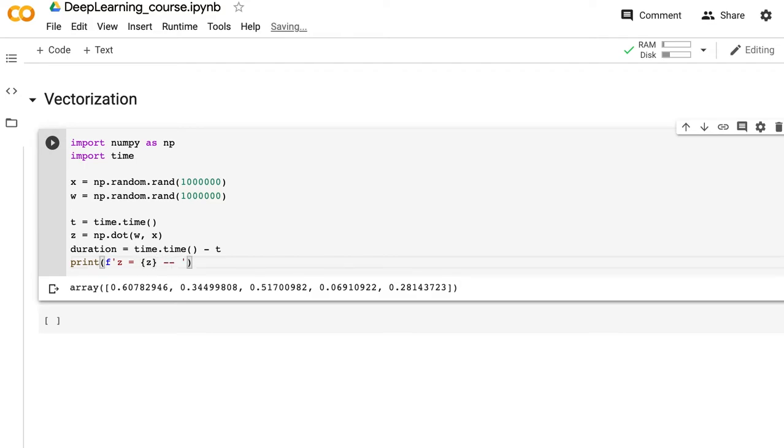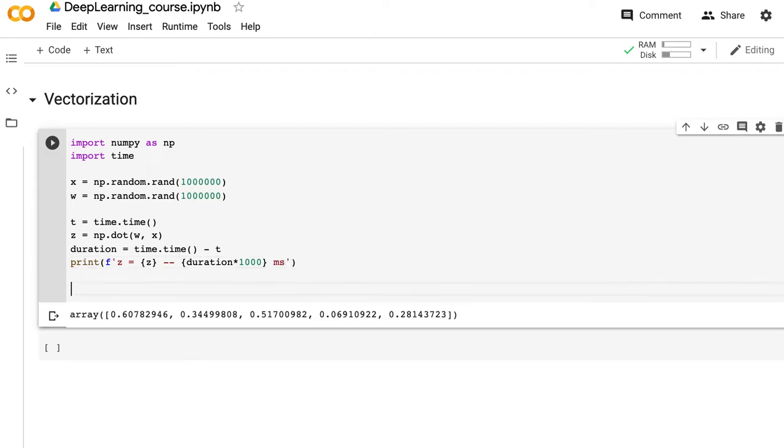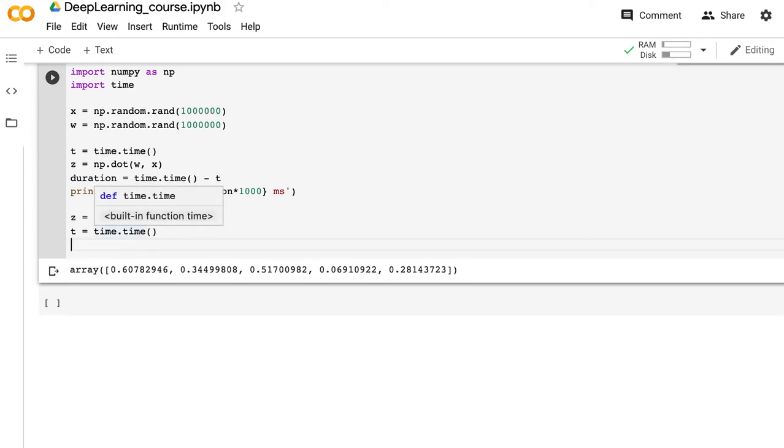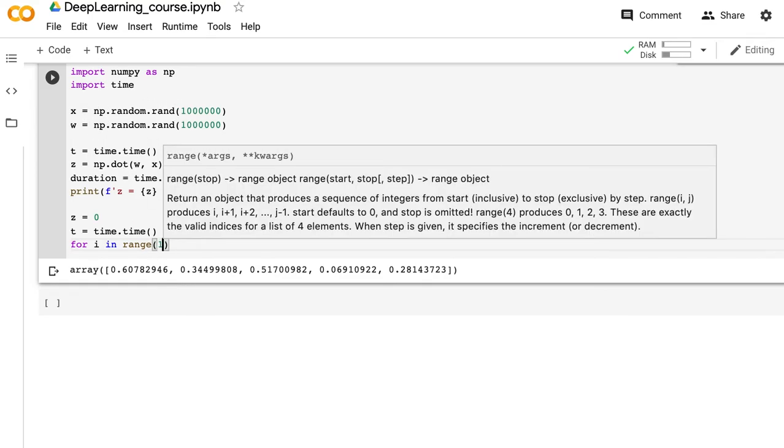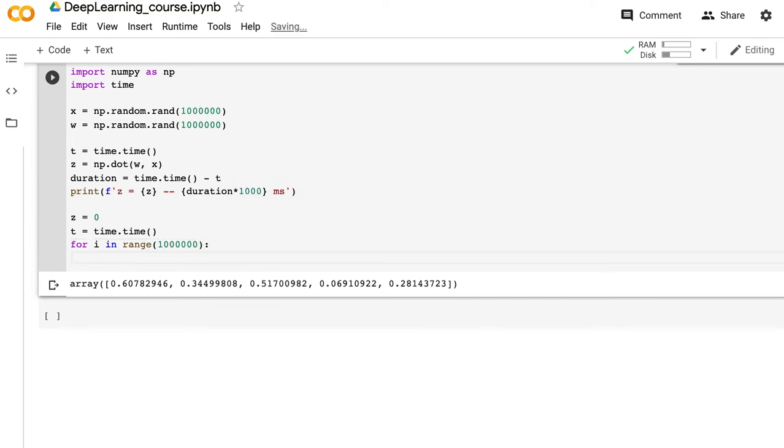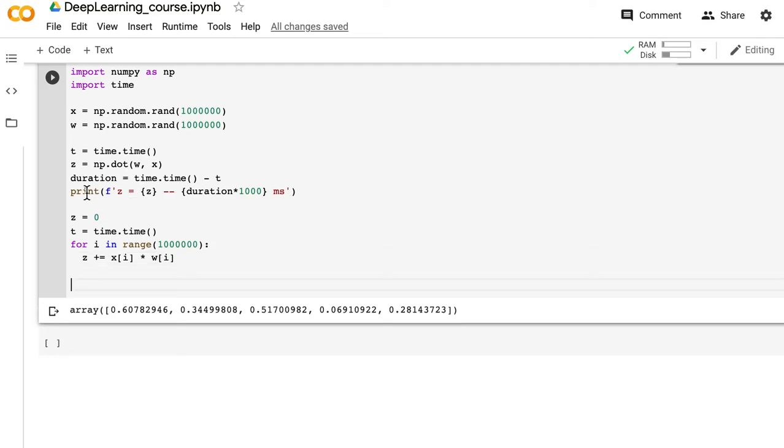Next, we reset z to 0 and reset the timer. For the non-vectorized version, we use a for loop iterating 1 million times, computing z += w[i] * x[i].